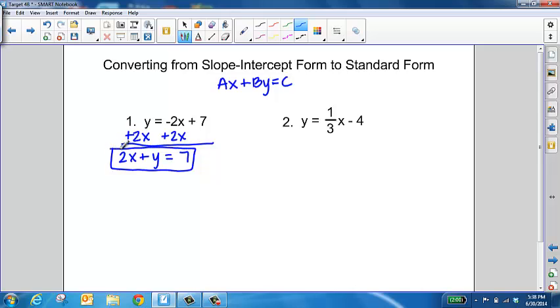For number 2, we're going to use very similar steps. Since we need to shift the one-third x to the left side, we'll use inverse operations. Since it's positive, we're going to subtract one-third x from both sides.